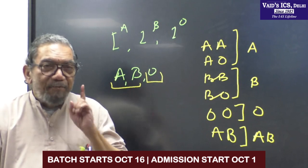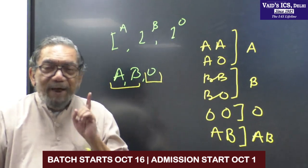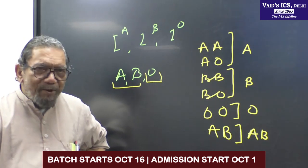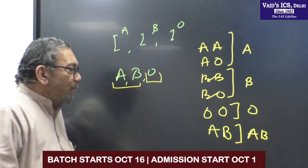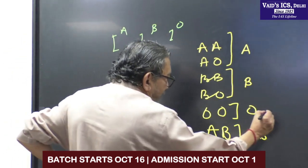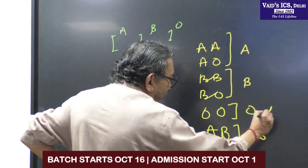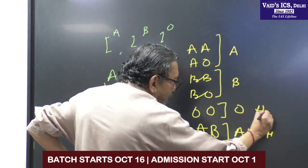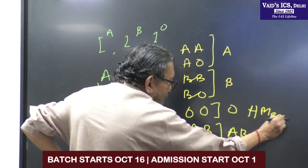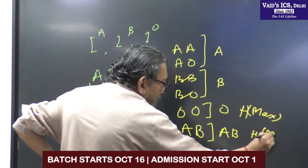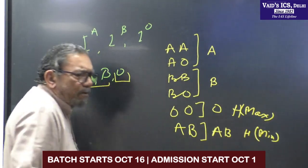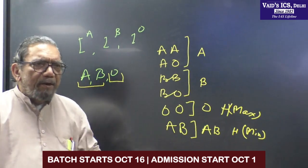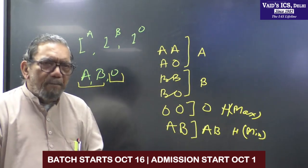Then there is H antigen as well — the ABH system. H is most commonly found associated with blood group O, and least with AB. If you write this, it's good. But if you don't, it's not strictly a part of the question, but it enlightens your examiner about your knowledge.